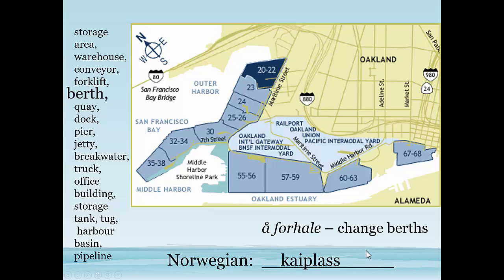One more thing: in Norwegian we say «avhala», and actually that means to move from one place inside a port to another. So if we were to move from one berth — for example berth 57 — and then move all the way over to berth 35, we would call that changing berth or changing berths. In Norwegian we say «avhala», which means to move from one place to the other inside one port.